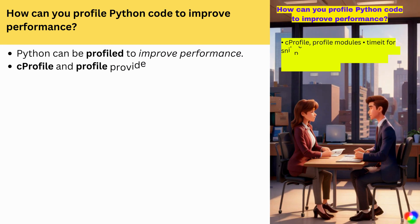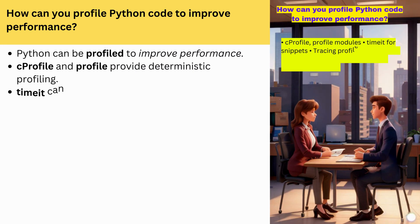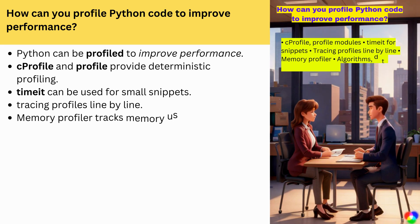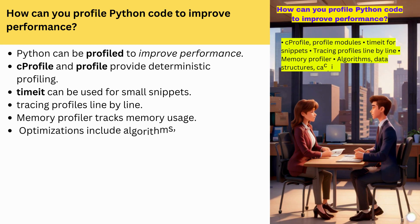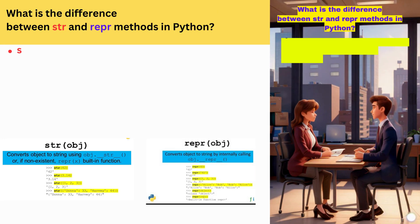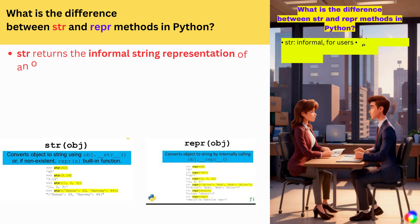How can you profile Python code to improve performance? cProfile and profile provide deterministic profiling. timeit can be used for small snippets. Tracing profiles line by line. Memory profiler tracks memory usage. Optimizations include algorithms, data structures, and caching.